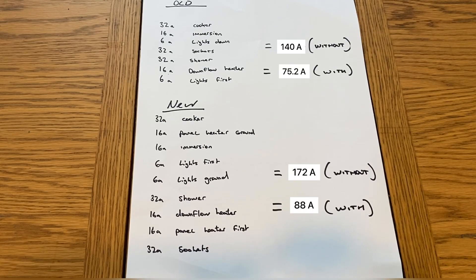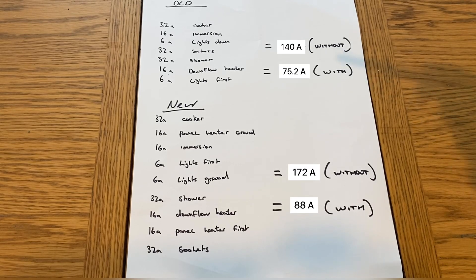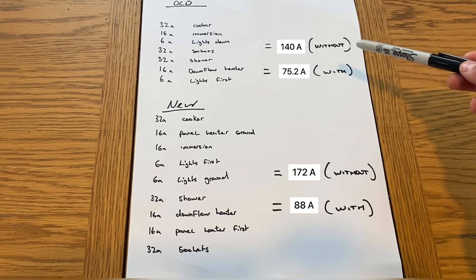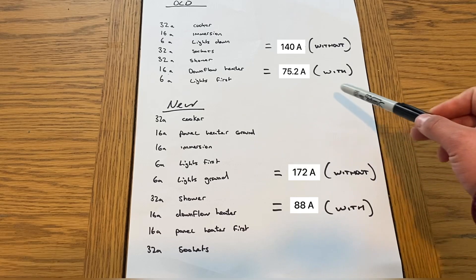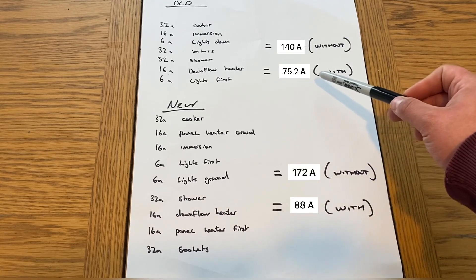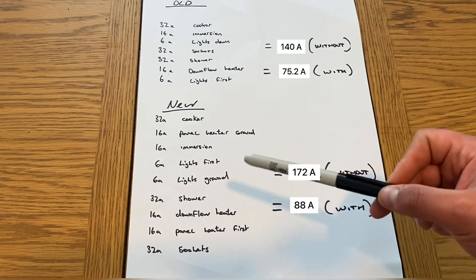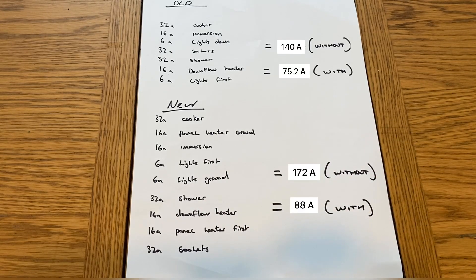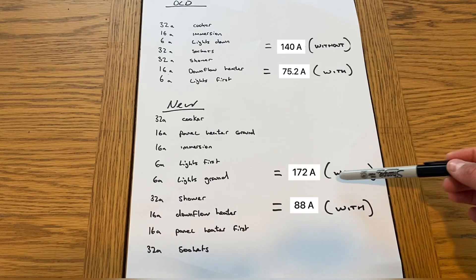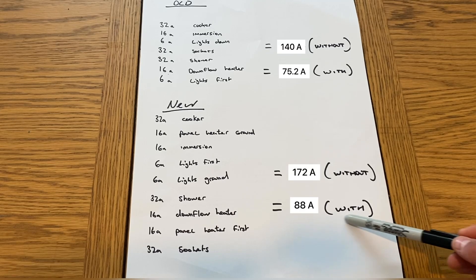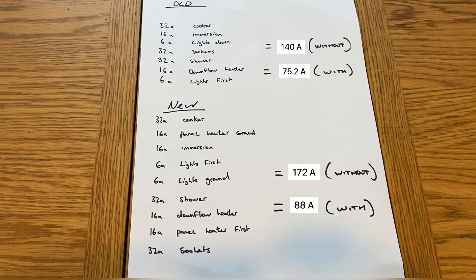It's definitely a significant difference. 140 amps without applying diversity to our maximum demand, and when we apply a form of diversity we get 75.2. And for the new one, this is the one we're worried about the most just to make sure that we can do what we're proposing to do. Without diversity 172 amps, however when we apply it it's actually only 88 amps. That means we can continue with our proposed plans. It's not going to have too much of a major effect on the installation.